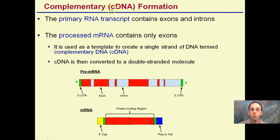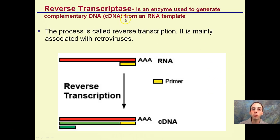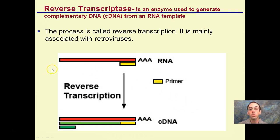Complementary DNA formation — lowercase cDNA: a primary RNA transcript contains exons and introns, while processed mRNA contains only exons. This mRNA is used as a template to create a single strand of DNA termed complementary DNA. This cDNA is then converted to a double-stranded molecule. Reverse transcriptase is the enzyme used to generate complementary DNA from an RNA template — that's why it's called reverse transcription. It's mainly associated with retroviruses — viruses whose main sequence is RNA, and which use reverse transcription to generate DNA to redirect the cell they're infecting.